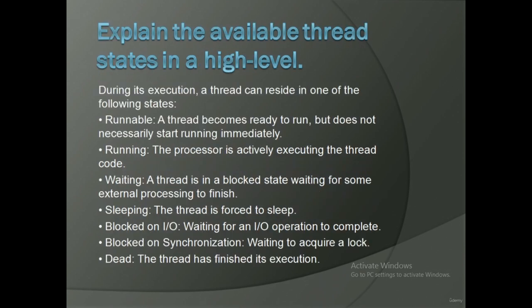Explain the available thread states at a high level. During its execution, a thread can reside in one of the following states: runnable, running, waiting, sleeping, blocked on IO, blocked on synchronization, or dead. Runnable: a thread becomes ready to run but does not necessarily start running immediately. Running: the process is actively executing the thread code. Waiting: a thread is in a blocked state waiting for some external processing to finish. Sleeping: the thread is forced to sleep. Blocked on IO: waiting for an IO operation to complete. Blocked on synchronization: waiting to acquire a lock. Dead: the thread has finished its execution.